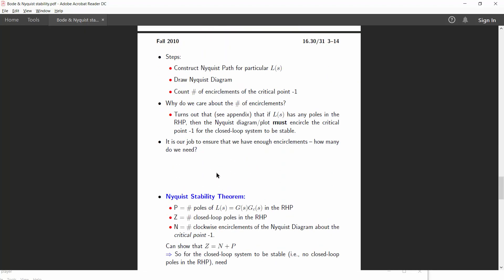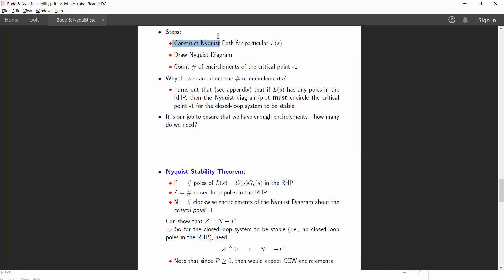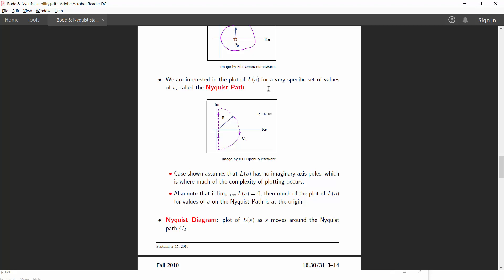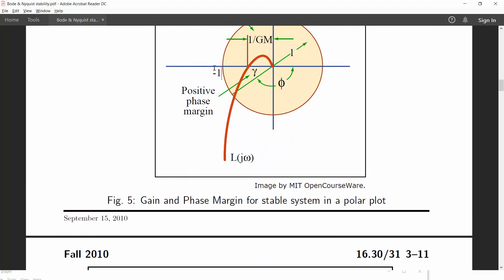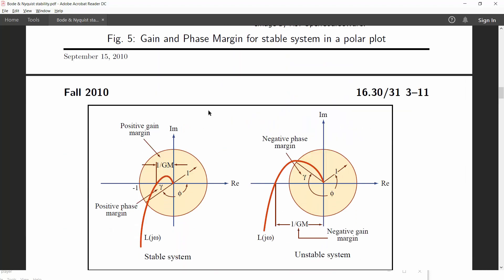Now in case of the Nyquist plot, after constructing Nyquist plot in order to determine stability, you will have to count the number of encirclements of the critical point minus 1. So this is the point where you will be looking for encirclement by the plot.